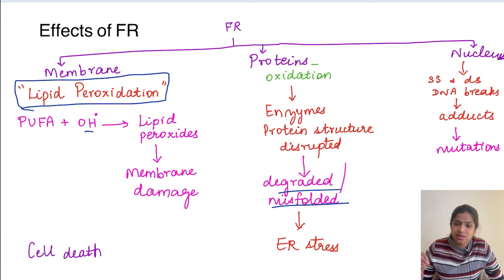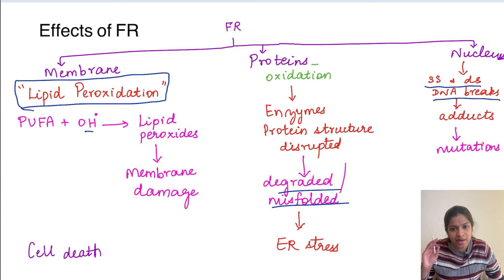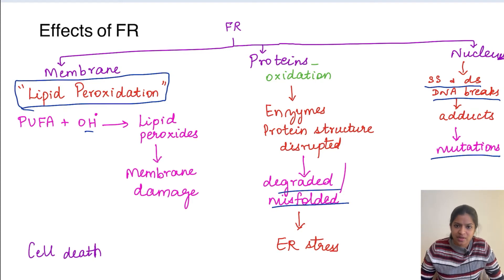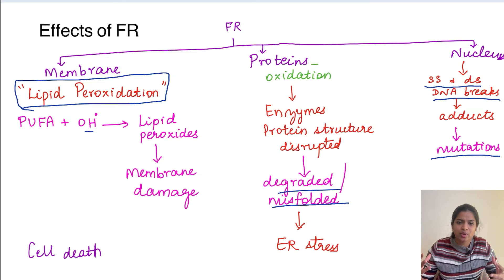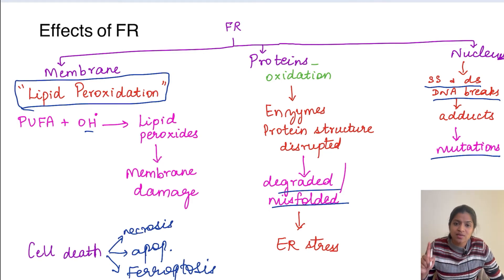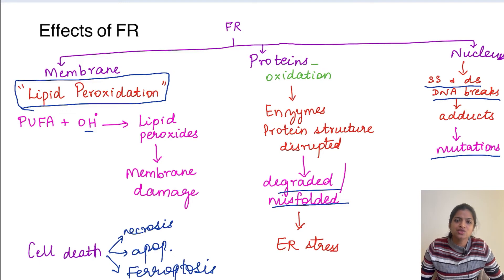In the nucleus, free radicals can induce single-stranded and double-stranded DNA breaks. Broken DNA can lead to the formation of adducts, and accumulated adducts lead to mutations with harmful effects. As this damage to membranes, proteins, and DNA accumulates, the cell eventually dies - by necrosis, apoptosis, or ferroptosis. Initially it was thought free radical injury leads only to necrosis, but now necrosis, apoptosis, and the new form of cell death, ferroptosis, have all been identified as outcomes.